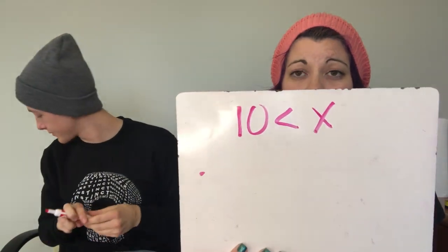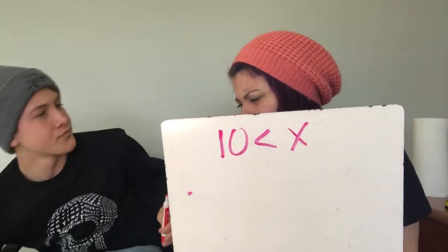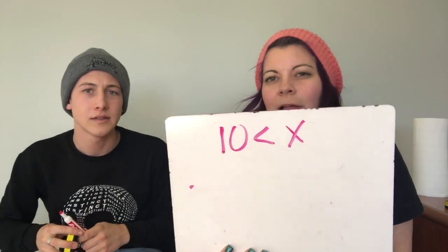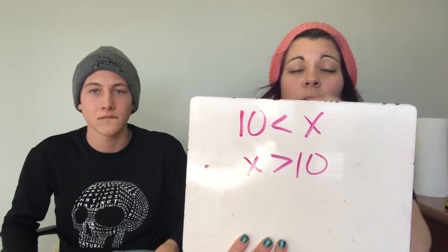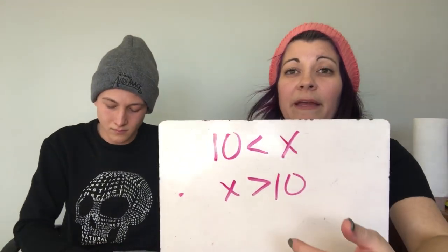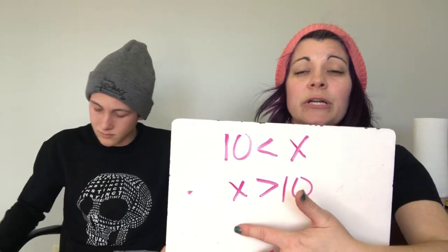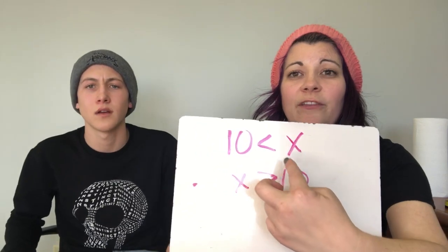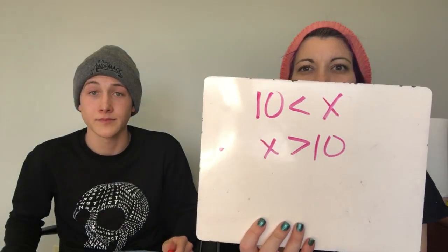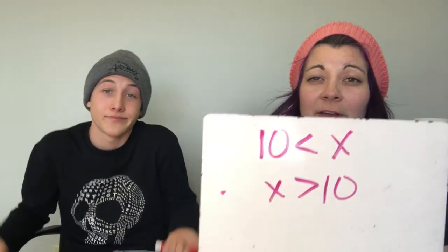One more tip: if the variable is not on the left side and you want to rewrite it, you can switch the order — but if you do that, you also have to flip the sign. It's easiest to keep the variable on the left, since then greater than goes right and less than goes left. If the variable is on the right, flip the order and flip the sign too.